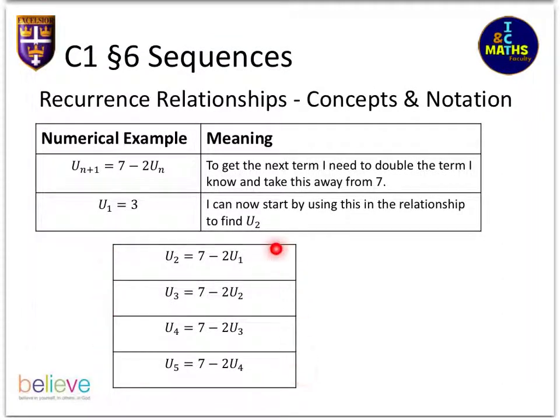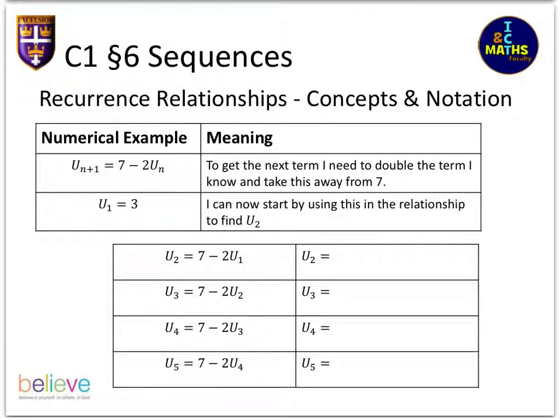What I've done here is I've just shown you a bit more explicitly how exactly you work out the second one. I've used this formula but instead of all these n's I've used the actual numbers that I'm interested in. So u2 is seven take away two lots of u1, and u3 is seven take away two lots of u2, and so on.